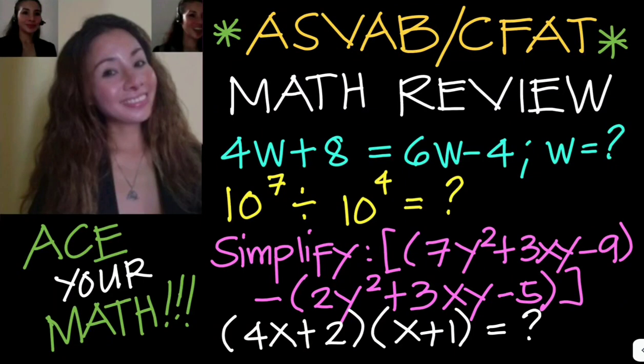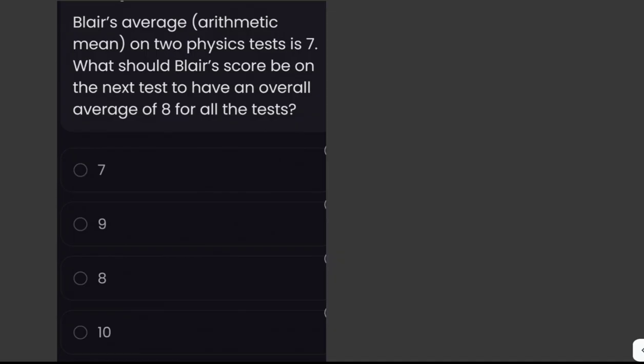In this video, you will learn how to solve different math problems to prepare for the ASVAB or CFAT exam. Blair's average or arithmetic mean on two physics tests is 7. What should Blair's score be on the next test to have an overall average of 8 for all the tests?